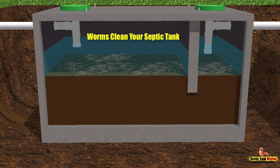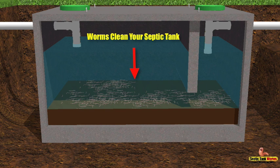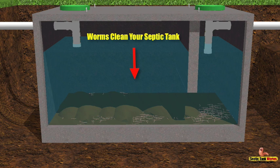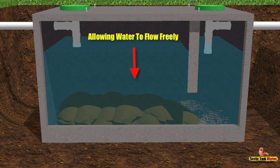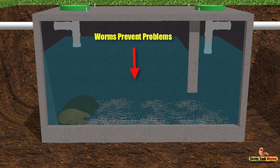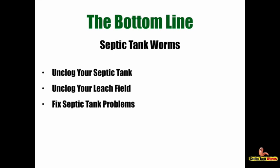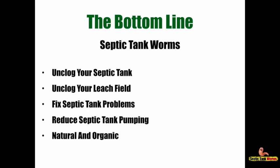While the worms are at work in your drain field pipes, they're also at work in your septic tank, eating that sludge and completely cleaning it out — once again allowing wastewater to flow freely from your property into the tank, into the drain field, and straight into the soil. The bottom line is that septic tank worms unclog your septic tank, unclog your leach field, fix septic tank problems, reduce septic tank pumping times, and they're natural, organic, and will save you thousands of dollars on repair costs.